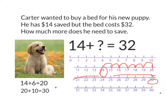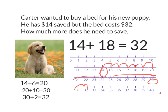Here's what I've done: 20 plus 10 equals 30, but I still need to get to 32. So I need to jump 2 more from 30 to 31 to 32. Now I need to see how much I jumped altogether, because that is going to tell me my answer. So I'm going to add my 6, my 10, and my 2. I know that 6 plus 10 is 16, plus 2 more equals 18. So 14 plus 18 more gets me to 32 altogether.